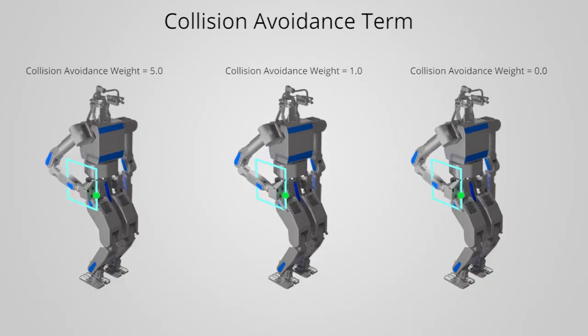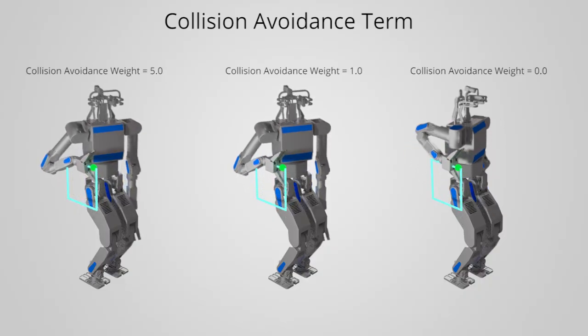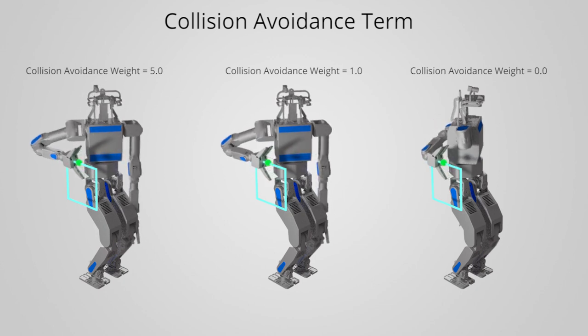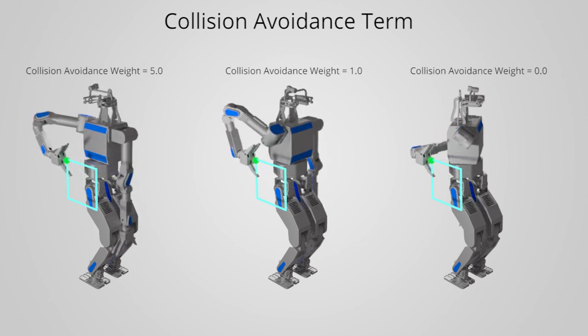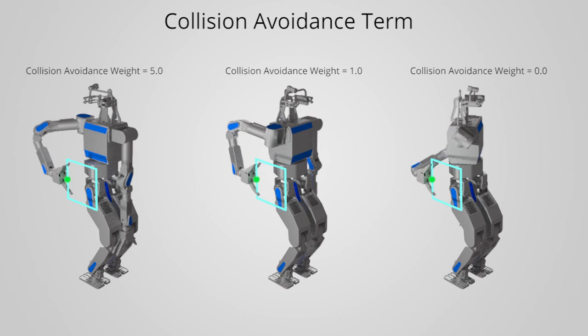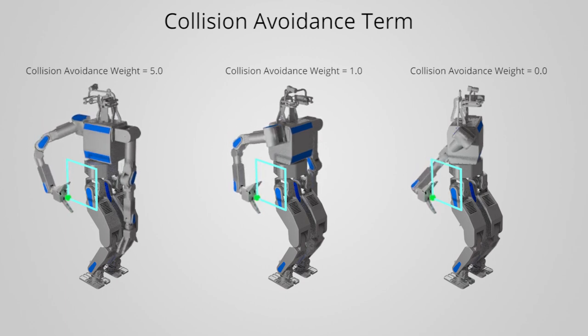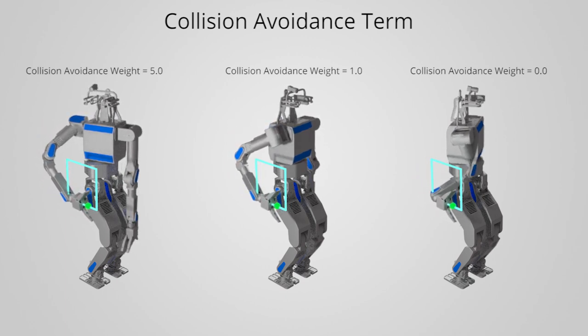Our collision avoidance term is trying to achieve two goals. One, approximate a distance to a collision state, and two, calculate this approximate distance as fast as possible such that it is amenable for use in a real-time optimization loop.